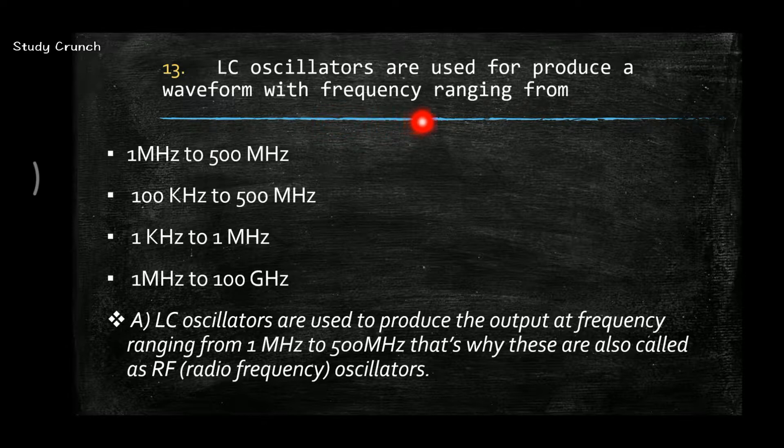LC oscillators are used for the production of waveform with frequency ranging from 1 megahertz to 500 megahertz. It is also known as RF or the radio frequency oscillator.